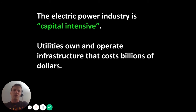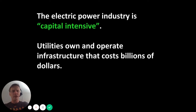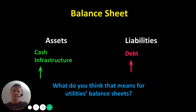One really important thing to realize about the energy industry — especially the electric power industry — is that it is capital intensive. Capital intensive means it costs a tremendous amount of money to build something. Electric utilities own and operate infrastructure that costs billions and billions of dollars. What that means for utilities' balance sheets is that they have a lot of infrastructure on the asset side and a lot of debt on the liability side.